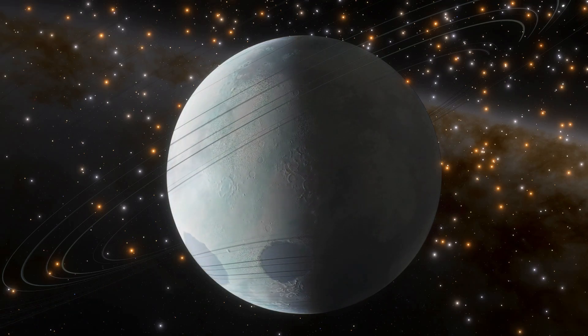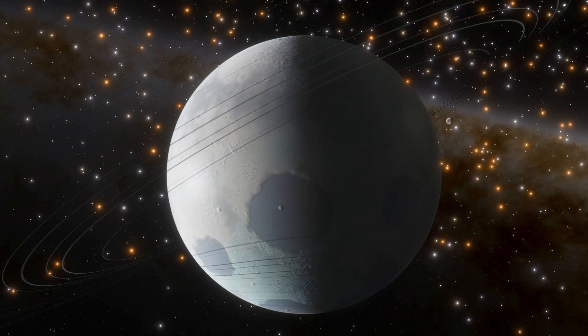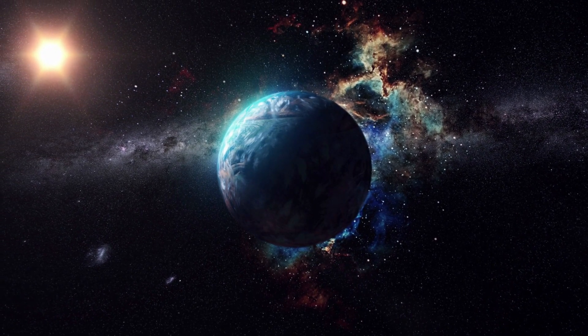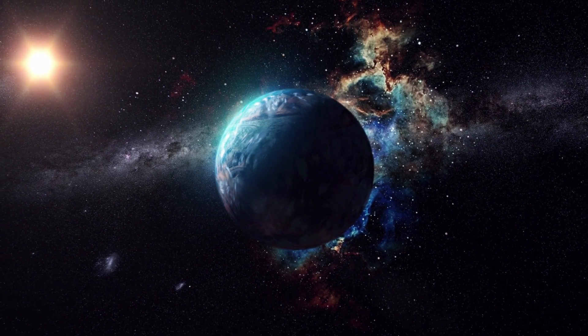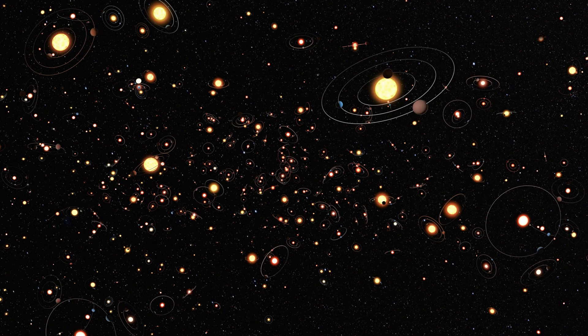An exoplanet is a type of planet that does not orbit the sun, but another star that lies outside our solar system and is much cooler than our sun. In simple words, any other planet outside our solar system is an exoplanet.